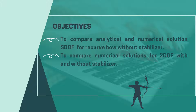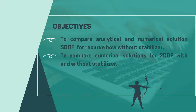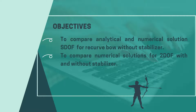The objectives of our project are: first, to compare analytical and numerical solutions for a single degree of freedom for a recurve bow without stabilizer; and second, to compare numerical solutions for two degrees of freedom, with and without stabilizer.